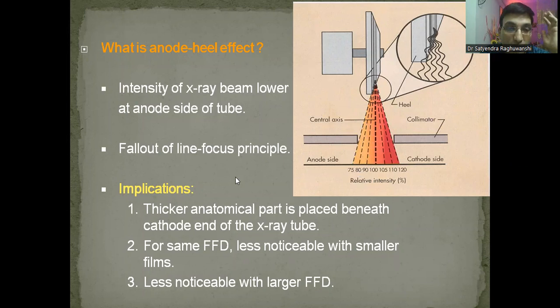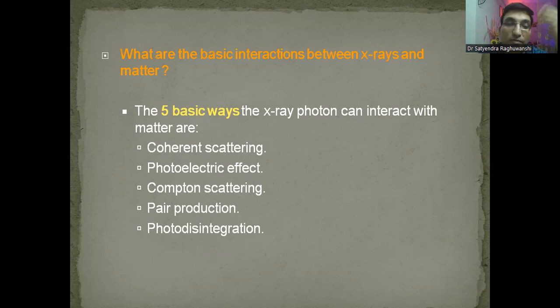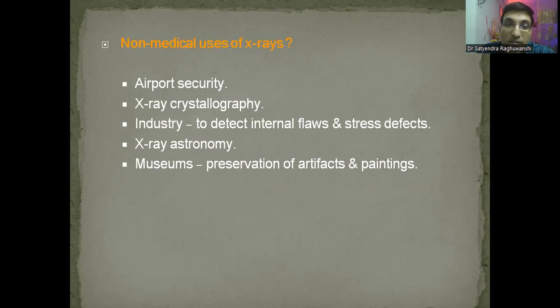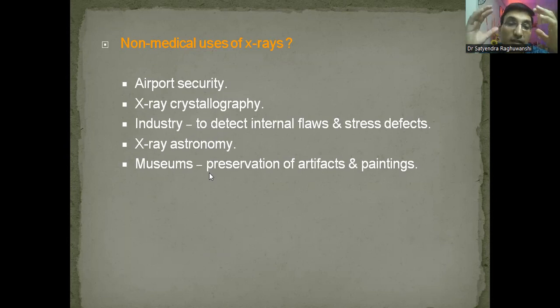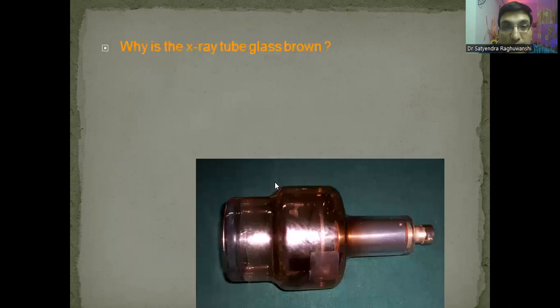To simplify: anode heel effect is the reduction in intensity of x-rays towards the anode side. The beam intensity is less on the anode side, so keep the thinner part towards the anode side. What are the various interactions between x-rays and matter? Remember these terminologies for table viva: coherent scattering, photoelectric effect, Compton scattering, pair production, photodisintegration. What are the non-medical uses of x-rays? Airport security x-ray machines, industrial use, x-ray crystallography, x-ray astronomy, and imaging museum mummies for artifact preservation.